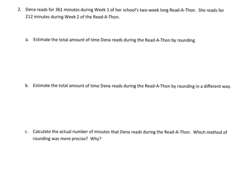Sometimes we call this front-end rounding or front-end estimation because the largest place value is 361. So we're going to take that 361 and the 212. And 361 rounded to the nearest 100 is going to be 400. So I'm going to put a, is almost or is about. That's that squiggly equal sign. It means it's about.